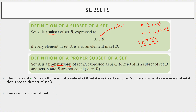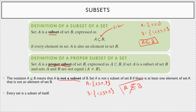This notation — A with a subset symbol with a slash through it — means that A is not a subset of B, if there is at least one element of set A that is not an element of set B. For example, let A equal {2, 3, 4, 7} and B equal {1, 2, 3, 4, 5}. Set A has 7 and B doesn't, so we say A is not a subset of B.